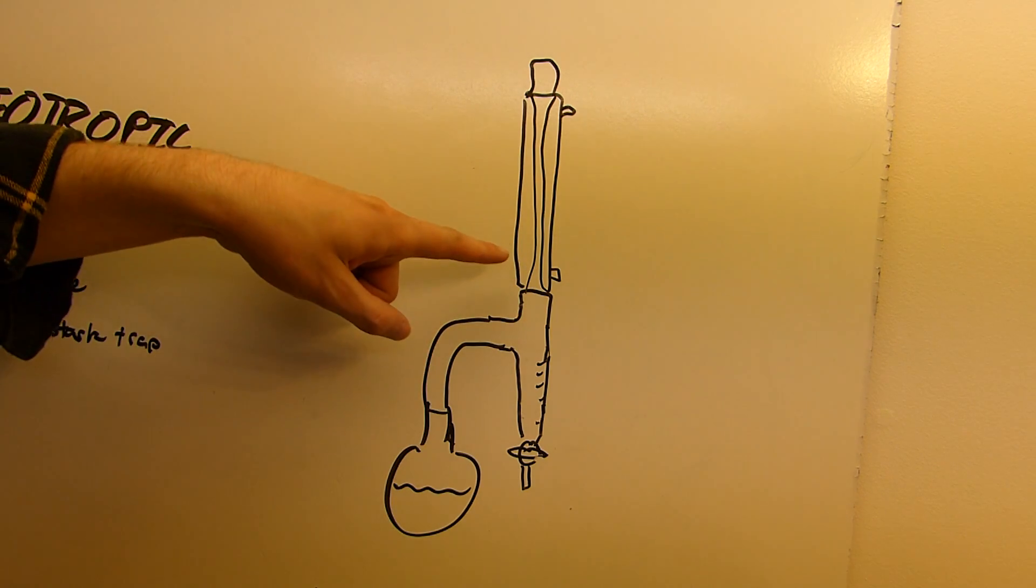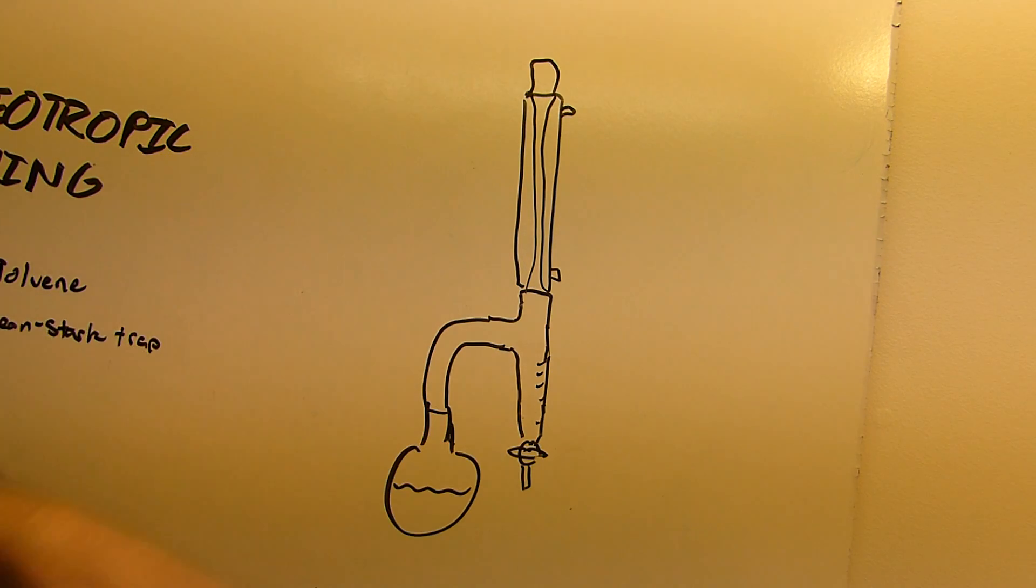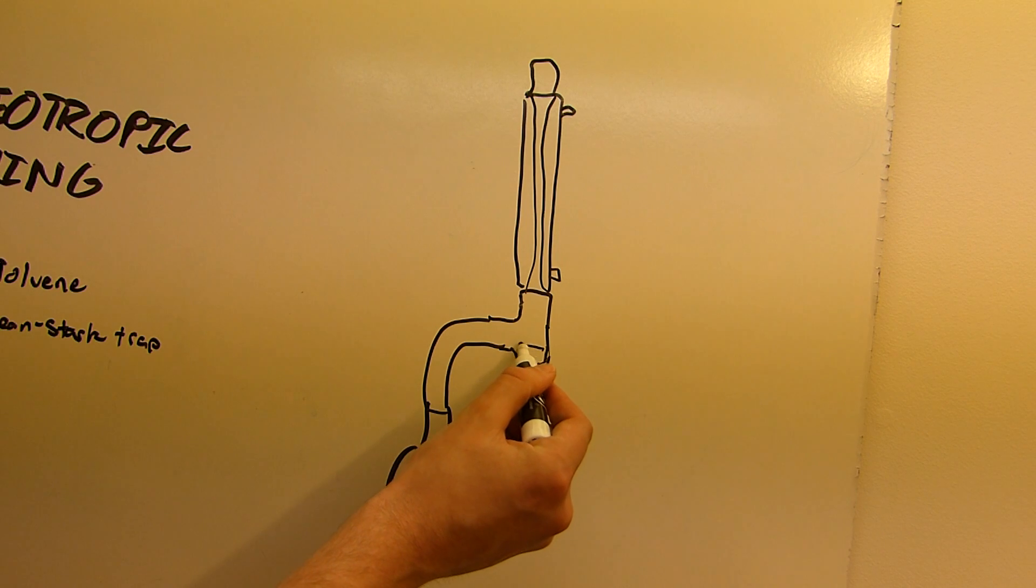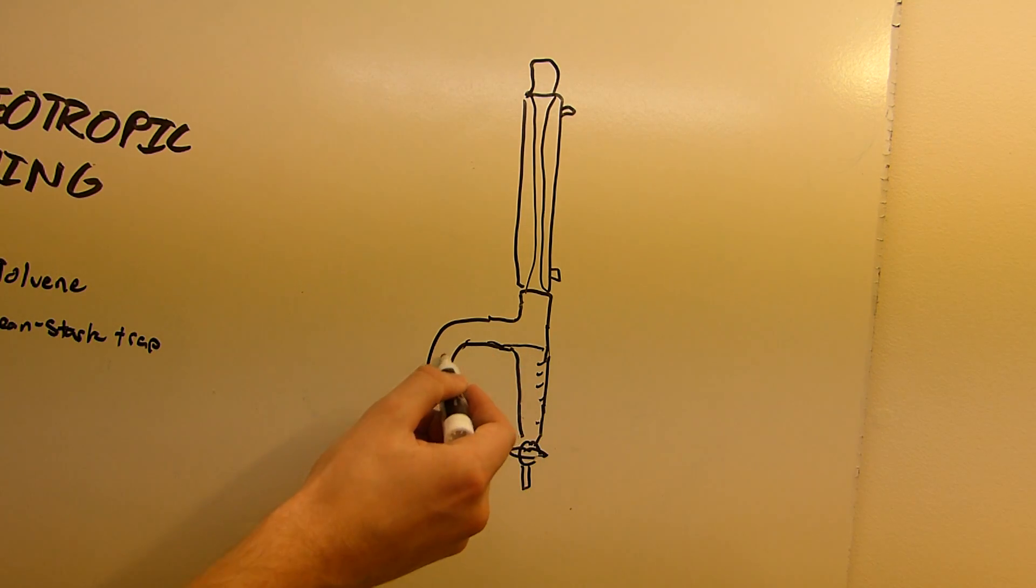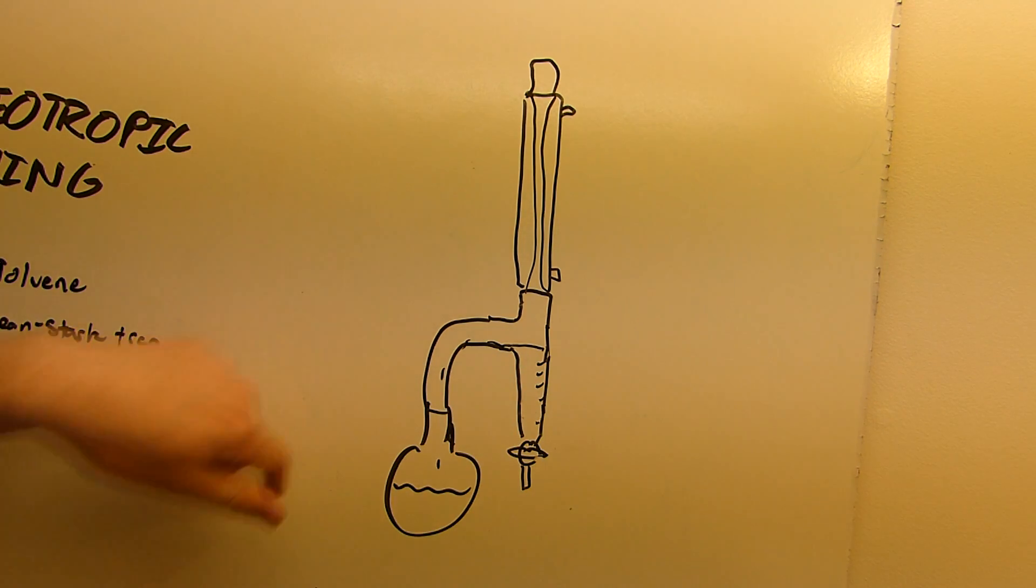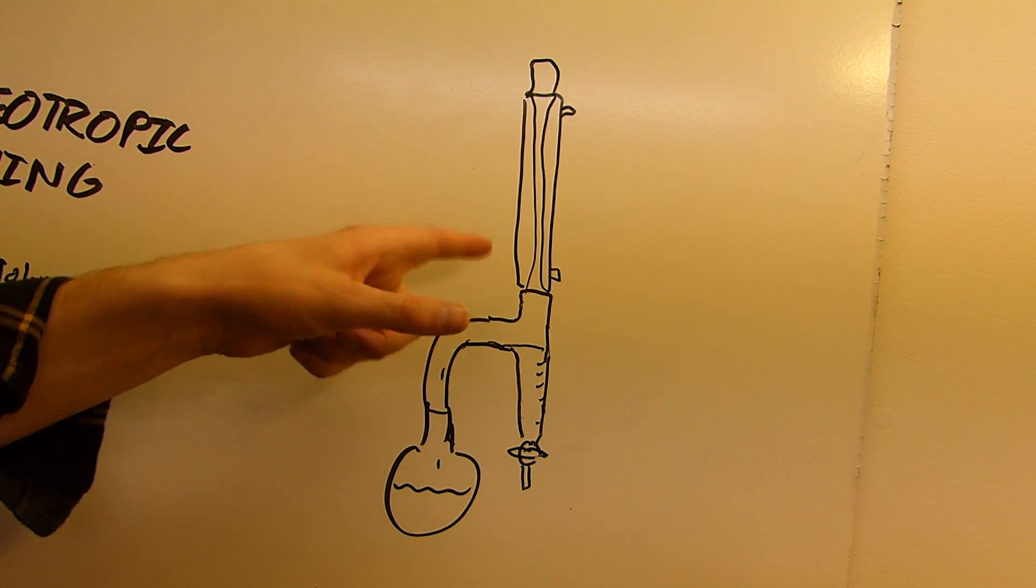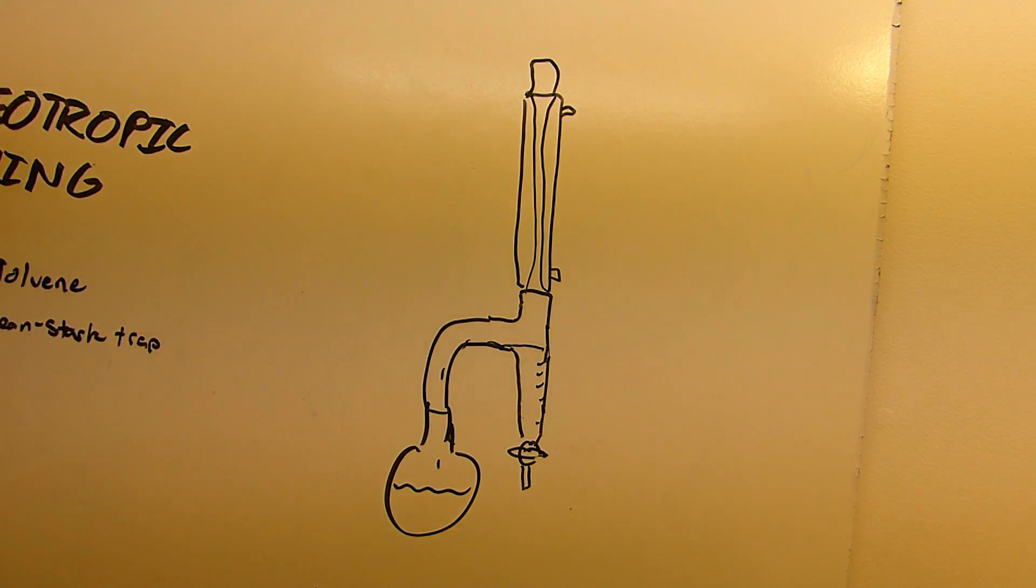But anyway, the vapor condenses in this condenser here and drips into this little sidearm, and the sidearm fills up like that, and then runs over and drips back down into the flask, and so you set up this little reflux path. But remember that water and toluene both are condensing in the condenser, but water is heavier than toluene, and they don't mix, so at least not to any great extent. I think it's like 99.95% toluene and the rest water in a typical water toluene situation, so it's very, very insoluble, insoluble enough for these purposes.